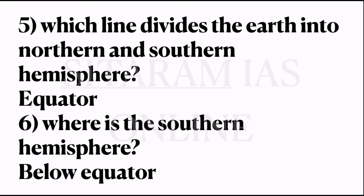And which line divides the earth into eastern and western hemisphere? It is the prime meridian or the zero degree longitude. The parallel of the equator is called latitude and the parallel of the prime meridian is called longitude. So the equator is also called zero degree latitude.